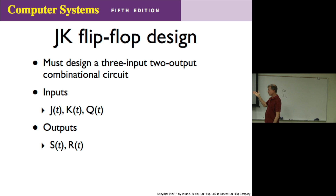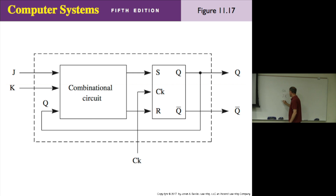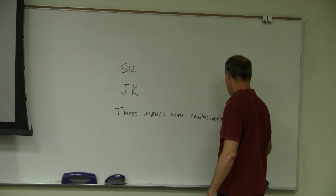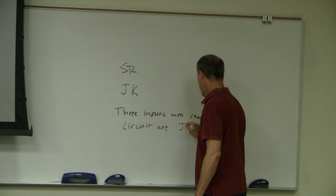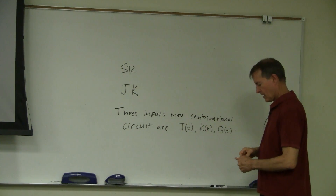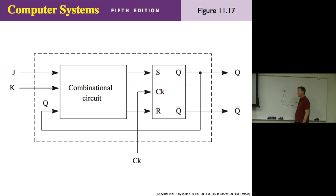Here is figure 11.9. We have the SR flip-flop, and we're going to feed back Q into the combinational circuit. Our input is going to be J and K. So our 3 inputs into the combinational circuit are J at time T, K at time T, and Q at time T. J and K come from outside, but Q comes from the feedback — the feedback from the SR flip-flop.